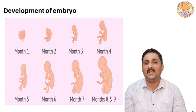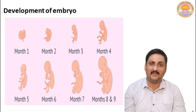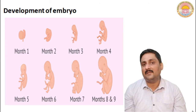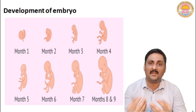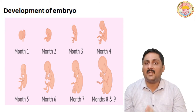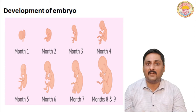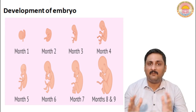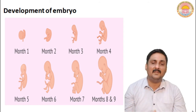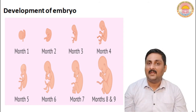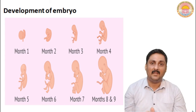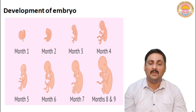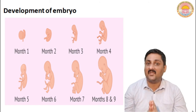In the sixth month, all major organs including the eyes and eyelashes are completely developed, and you can say the child is ready. But still, the gestation period takes about 9 months because various developments including neural development are completed after the child attains 9 months. After 9 months, the birth of the child takes place. The period from 0 to 9 months, during which the fetus develops inside the womb, is called the gestation period.